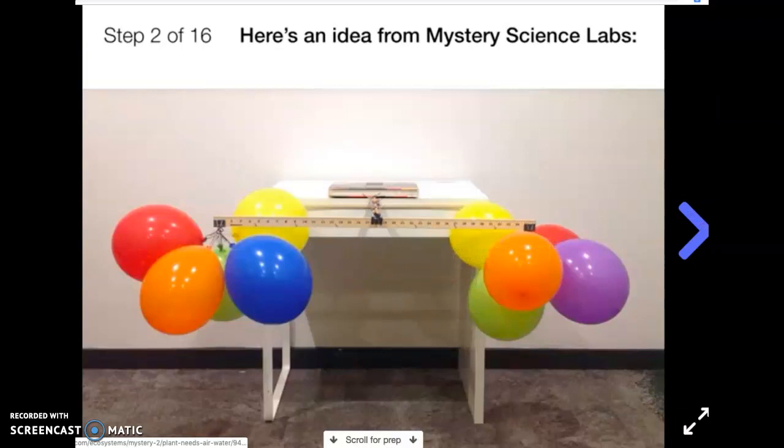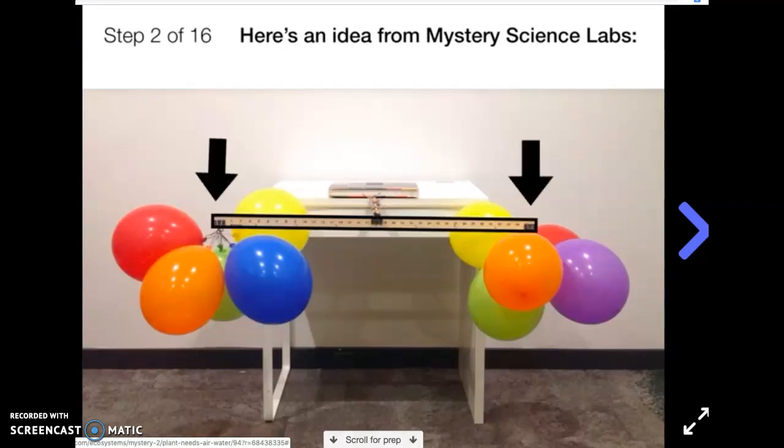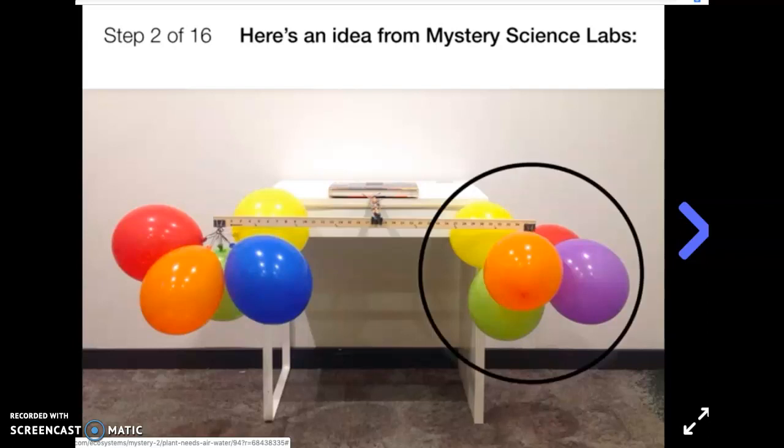Here's an idea we had. We'll put balloons filled with air on each end of the balance scale, and we'll make sure that we have the same number on each end. Then we'll let air out of all the balloons on one end and see what happens. Are you ready? If you're going to do the experiment our way, go to the next step.